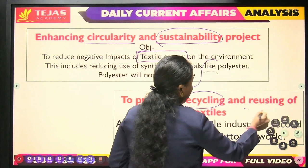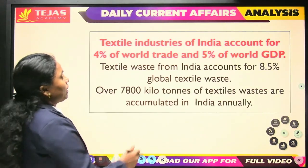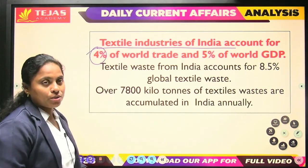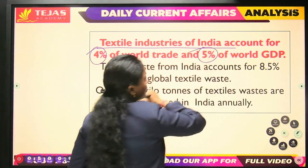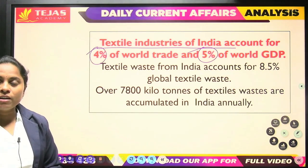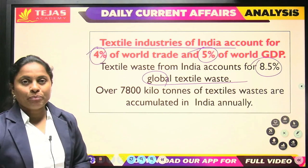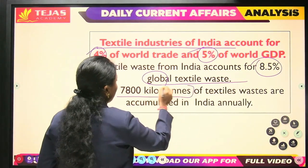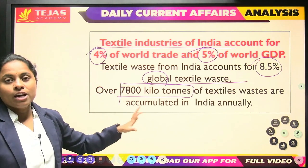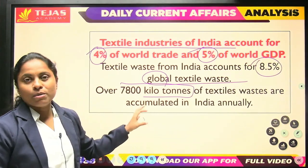Therefore, recycling and reusing of textiles needs to happen. India's textile industry accounts for 4% of the world trade. At the same time, in terms of waste produced, 8.5% of the global textile waste comes from India. Almost 7,800 kilo tons of textile waste are accumulated in India annually. This is the status of waste generated from the textile sector in India, and India is contributing to the global burden from its textile sector.